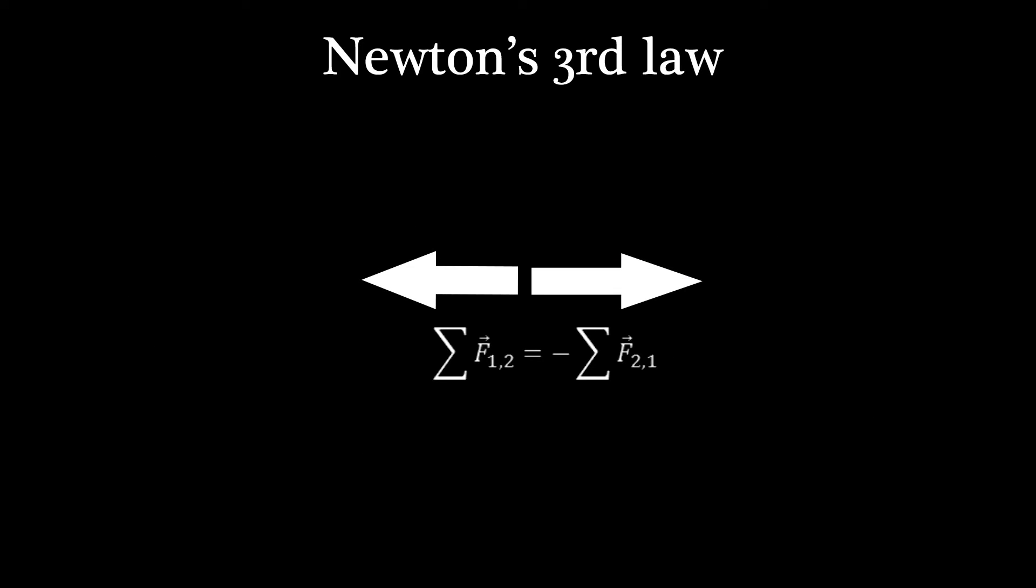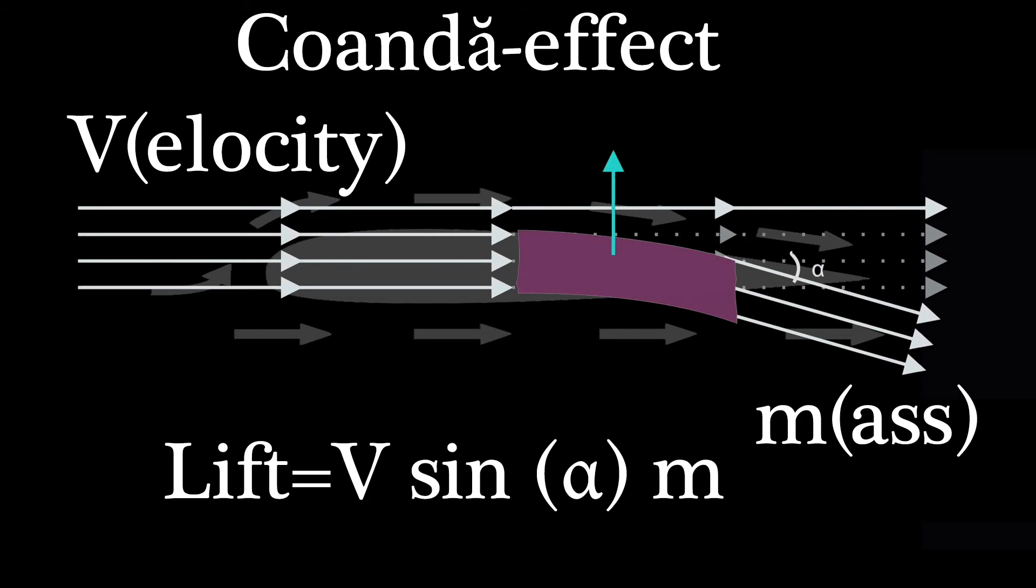Newton's third law states that all forces between two objects exist in equal magnitude and opposite direction. The Coanda effect is the tendency of a fluid jet to stay attached to a convex surface.